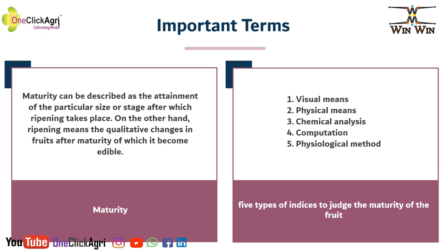Before we proceed to our lecture, we will learn the different terms. First is Maturity — it can be described as attainment of a particular size or stage after which ripening takes place. On the other hand, Ripening means the qualitative changes in the fruit after maturity, after which it becomes edible.